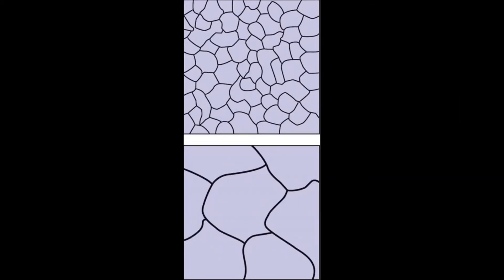During the grain growth stage, the small grains formed during recrystallization combine to form larger grains, causing the number of grain boundaries to decrease.